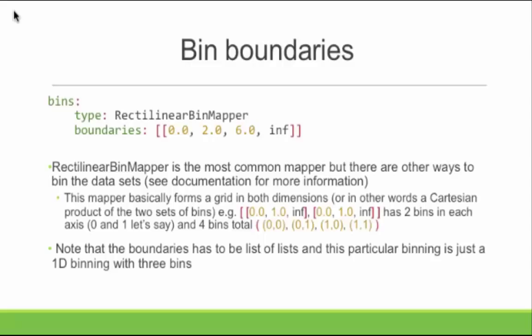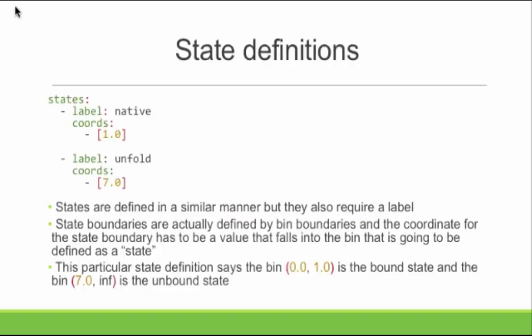Can you go over what these bin boundaries mean — the 0 and 2, and why there's an infinity term? I'm going to use this over the RMSD metric we looked at. Basically, 2 corresponds to about the folded structure, and beyond 6 is really unfolded — it's actually unraveling the alpha helix. So I'm going to calculate everything between 0 and 2, and calculate the rate into the bin between 6 and infinity. The infinity is a catch-all — if you know your RMSD will be less than some large number you can use that, but infinity catches everything.